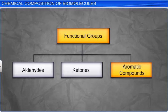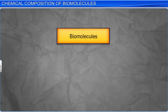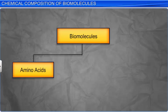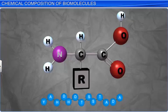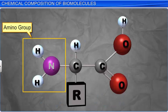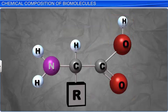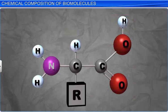In biology, however, functional groups are present as amino acids, fatty acids, and nucleotide bases, together known as biomolecules. Amino acids are the building blocks of all proteins. The amino group and carboxylic group are present on the same alpha carbon atom of the amino acid; hence, they are also known as alpha amino acids.